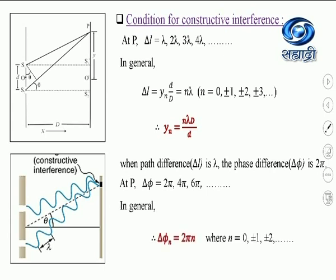In general, we can write the condition for phase difference between the two waves for the nth bright fringe as delta phi = 2πn, where n is an integer: 0, ±1, ±2, and so on. If n equals 0, the phase difference is 0 and we get the central bright point. If n equals 1, the phase difference is 2π and we get the first bright fringe on either side of the central bright point. When n equals 2, phase difference is 4π and we get the second bright point on either side.